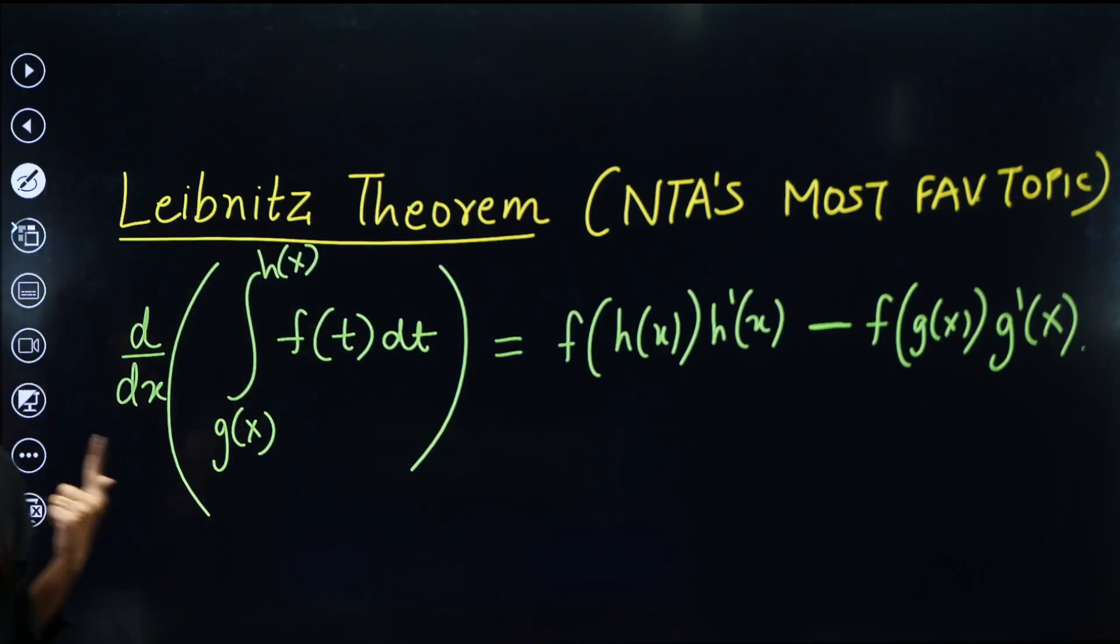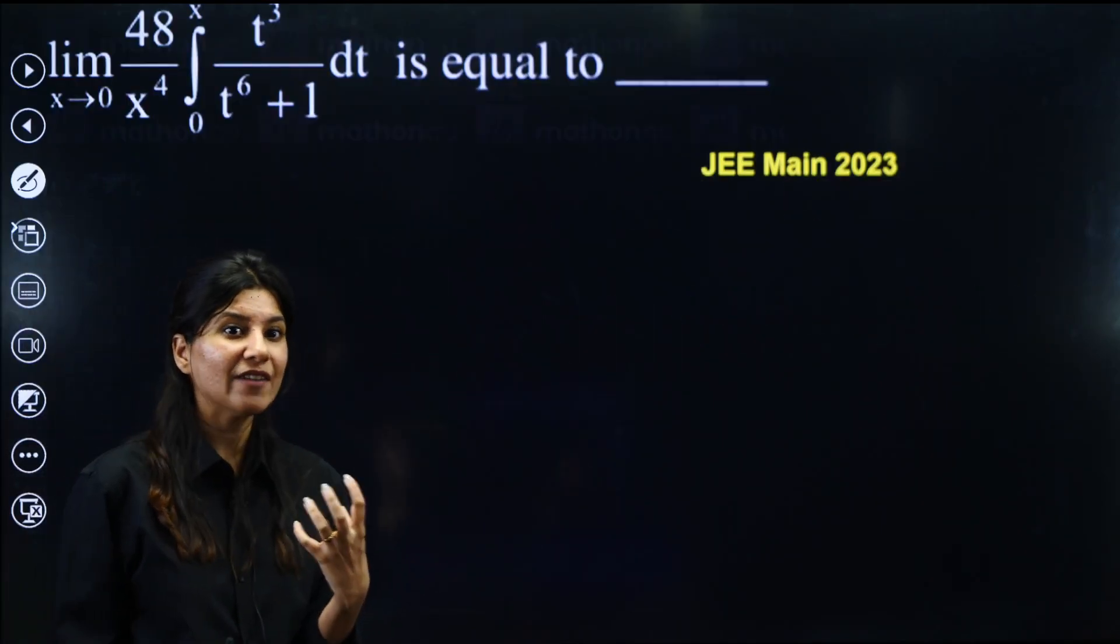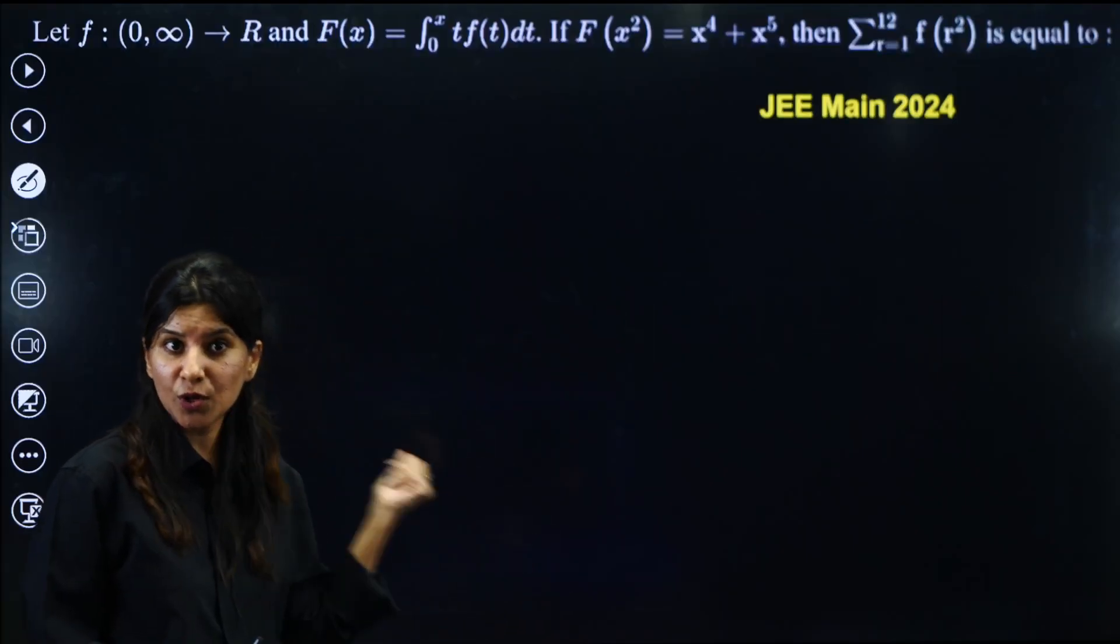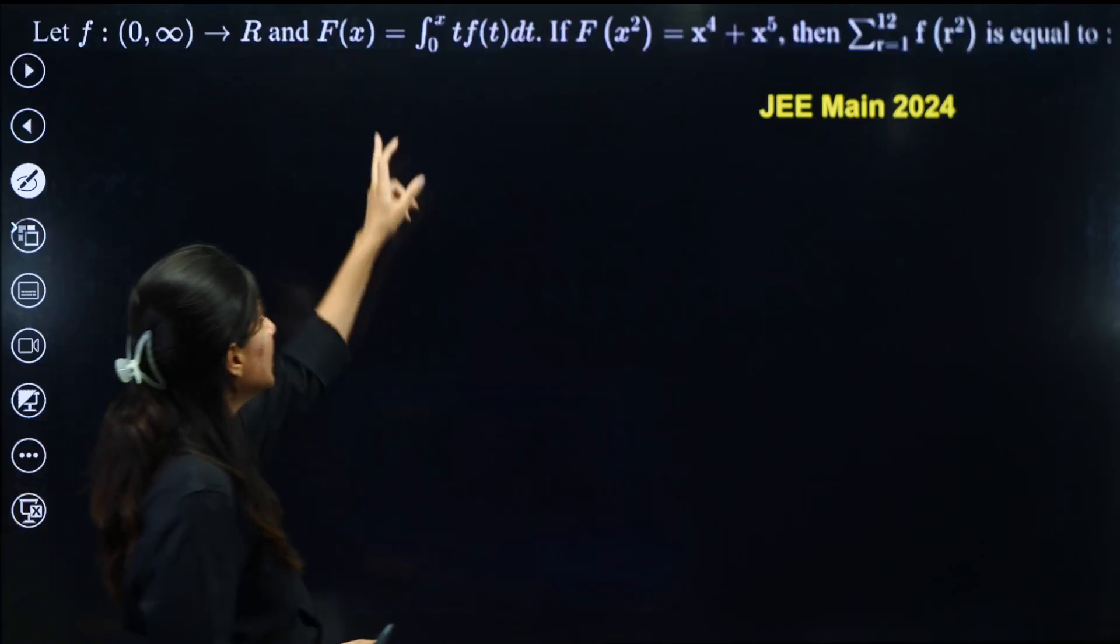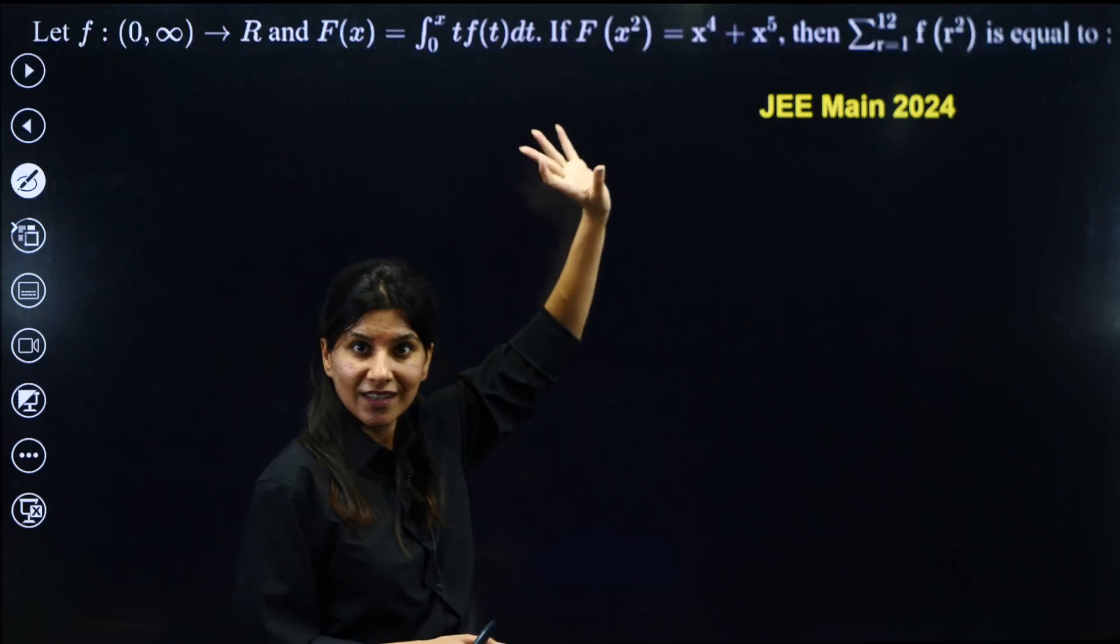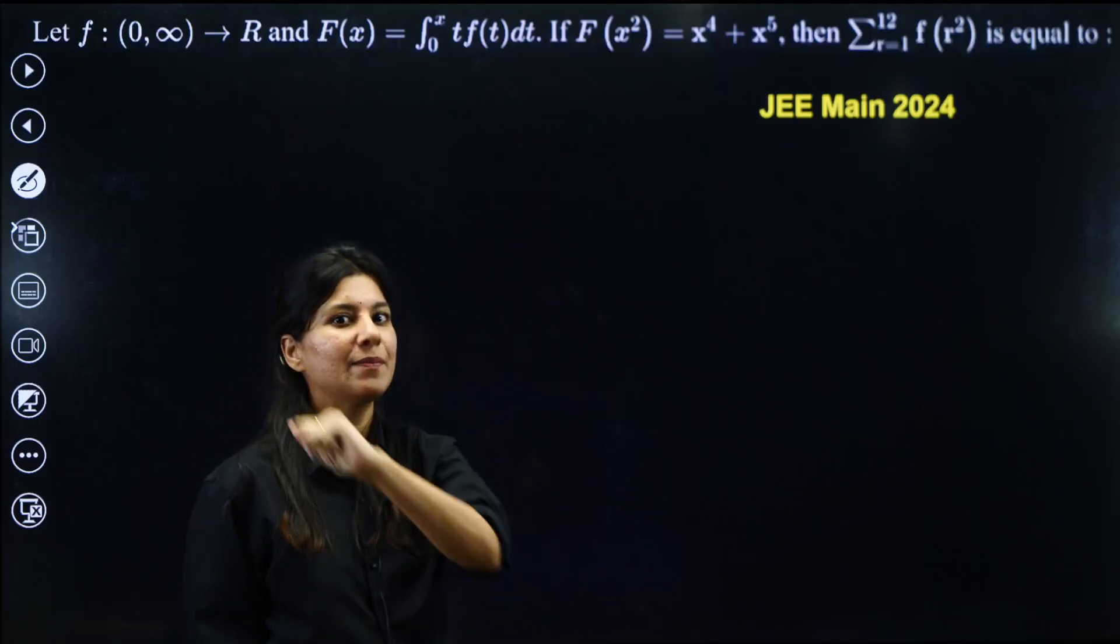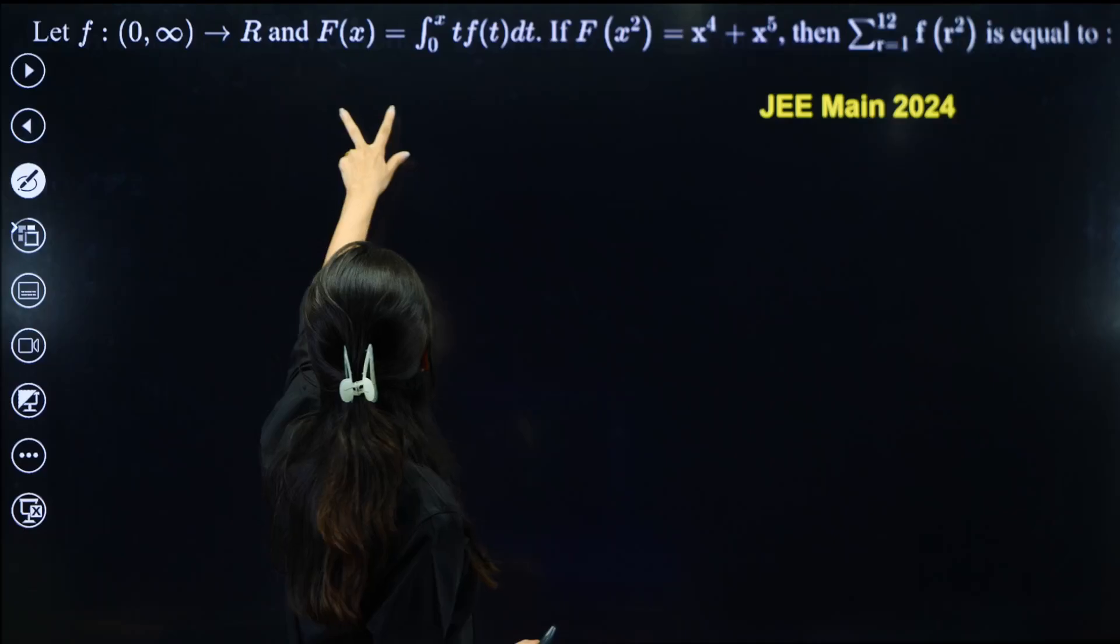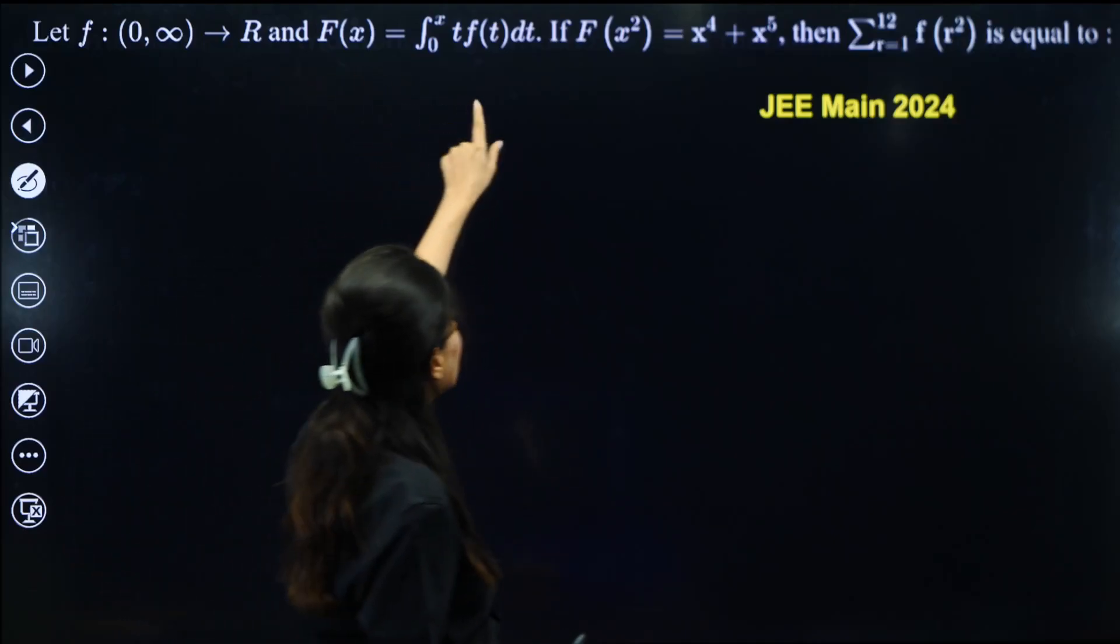Now, let's apply and understand whether we have understood this theorem or not. So let's start with JEE Mains 2024 problem. f(x) is integral of this. The moment we see 0 to x, that means variable limits, Leibniz theorem. So this is f'(x), so we need to differentiate both sides over here.